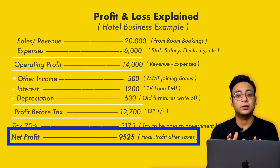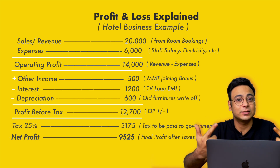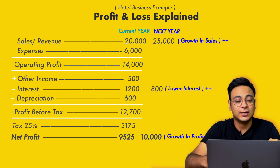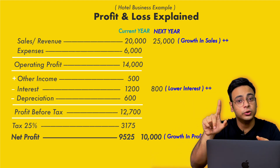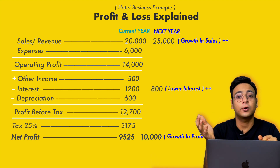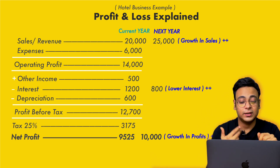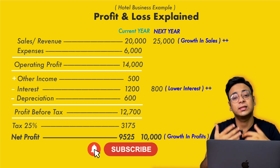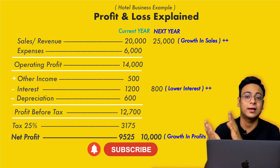This is what the profit and loss statement is all about. Every year when the company's sales is growing, that is a good sign. So let's say next year the company's sales have grown from 20,000 to 25,000 — that would be a good sign. The company's interest would have reduced from 1,200 rupees to 800 rupees — again, a very good sign. And if the company's profit increases from 9,525 to 10,000, that would again be a good sign. We'll see these things in the coming examples.